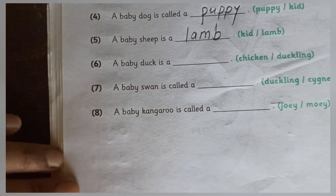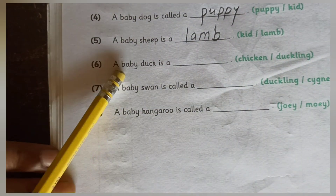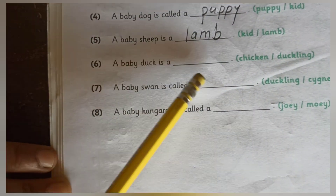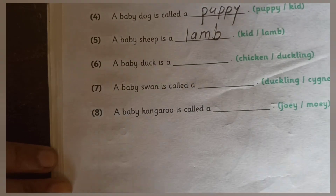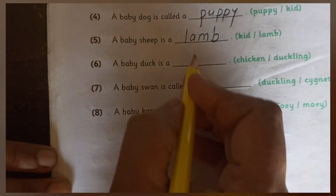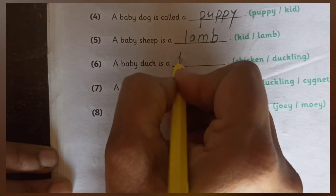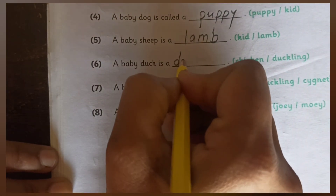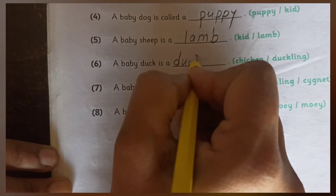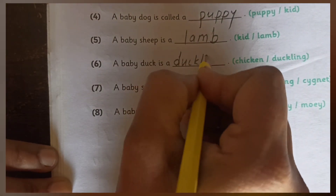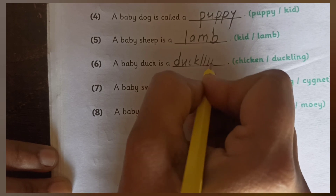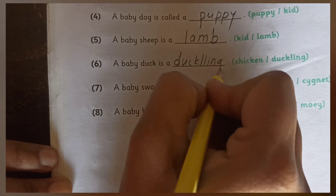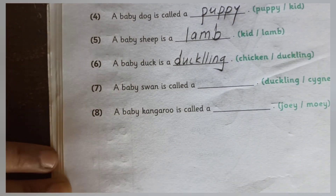Next one: baby duck — is it a chicken or duckling? Duckling. D-U-C-K-L-I-N-G — duckling.